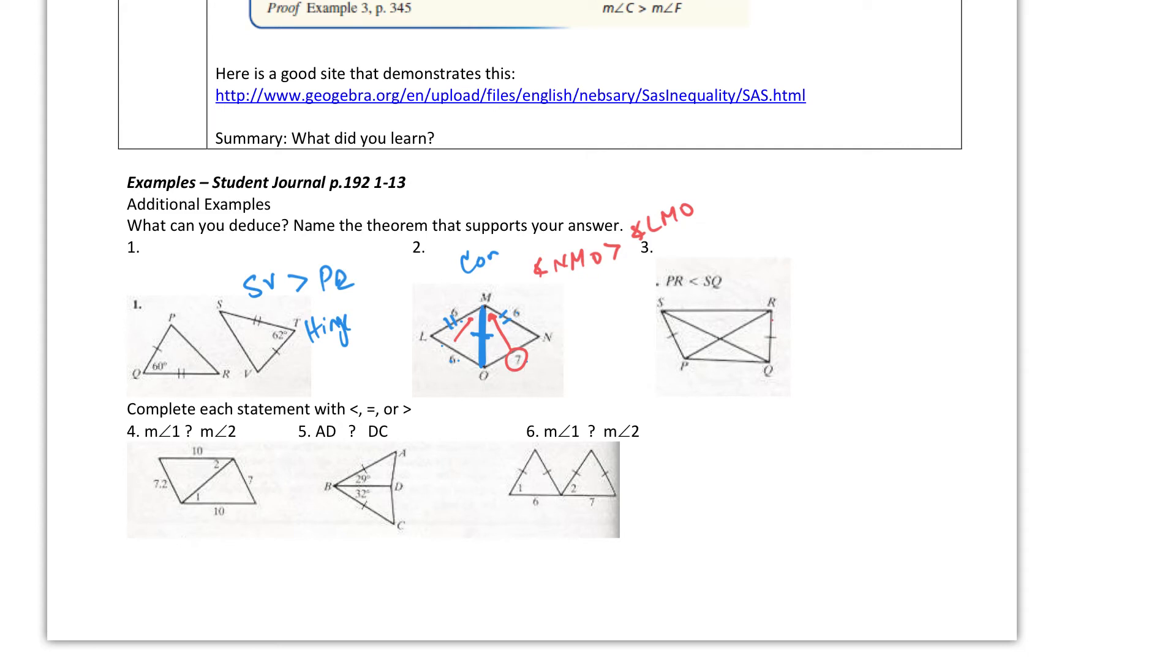Over here, I'm comparing two sides, where these are the same, and then PR, they're telling me, is less than SQ. Since PR is less than SQ, let's separate out the triangles. This is SQ, and this is P right there, and then the other one, like this, where this is R, Q, and P, and I know that this piece is congruent to itself.